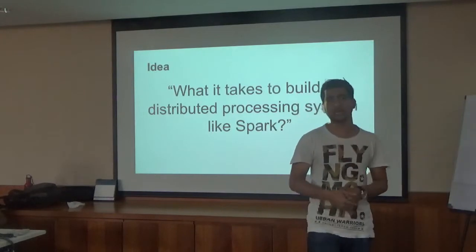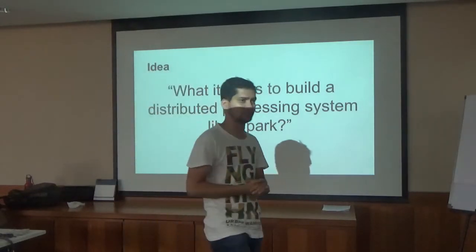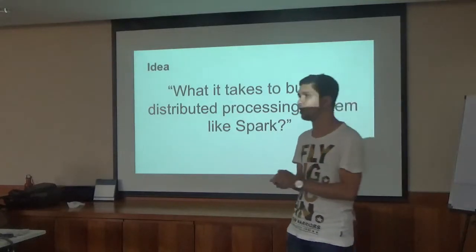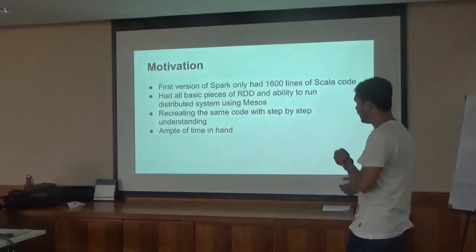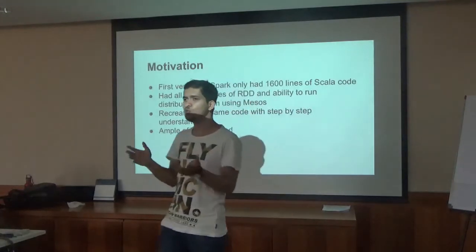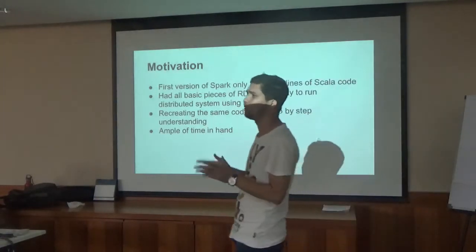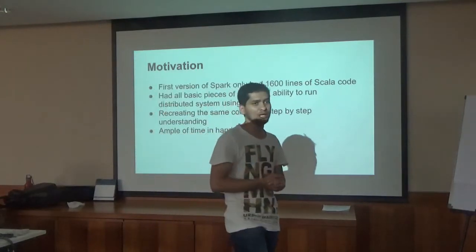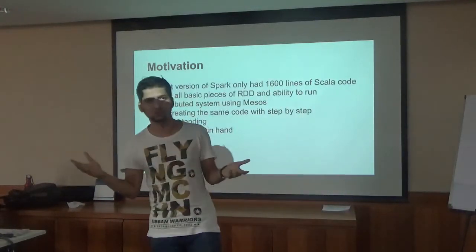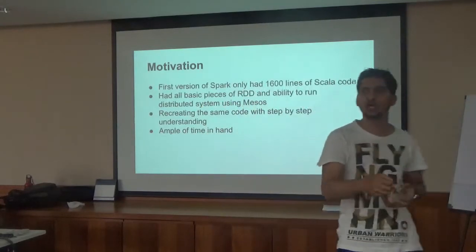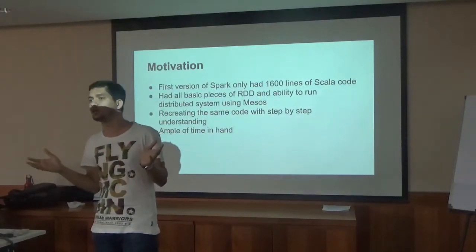Now what was the original idea? People who have not seen part one: the original idea is what it takes to build a distributed system which looks like Spark. The motivation behind this idea was that at some point the creator of Spark gave a speech saying the first version of Spark only had 1600 lines of code, which already had all the RDD and distributed system. Which means, if you can write those 1600 lines of code, you can really create a distributed system as powerful as the 0.1 version of Spark, which is not too difficult to do.